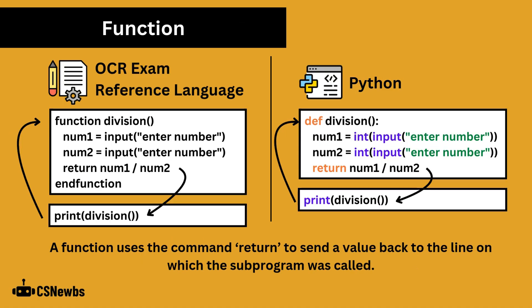A function uses the command return to send a value back to the line on which the subprogram was called. This example calls division, which inputs two numbers and then divides and returns the answer. Writing a print statement around division when it is called means the returned value is output.